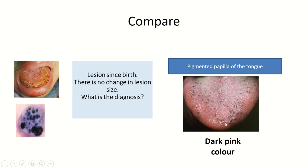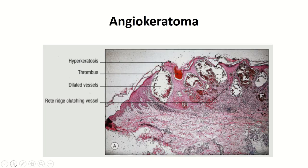Pigmented papillae of the tongue — the color of these lesions is darker compared to lesions of angiokeratoma. The histopathology of angiokeratoma shows hyperkeratosis, thrombosis, dilated vessels, and rete ridges that clutch the vessels.